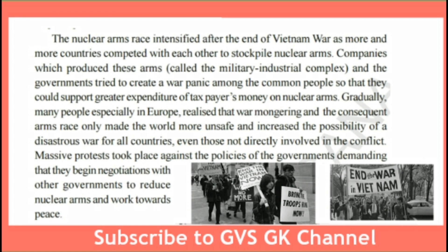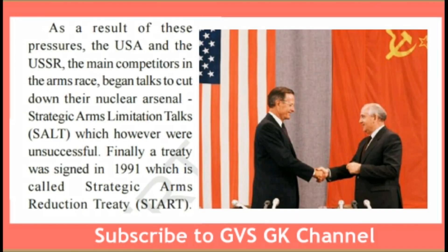Instead of spending money on nuclear weapons, if spent on public welfare, it would help develop countries. So almost all countries in the world negotiated with each other to stop nuclear weapons. As a result of these pressures, the USA and USSR — the main competitors in the arms race — began Strategic Arms Limitation Talks, known as SALT, which were however unsuccessful.